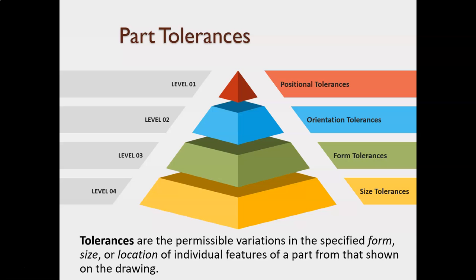There are really four different types of tolerances. We'll start at the bottom, the foundational level — level four tolerances. A level four tolerance is a size tolerance: your run-of-the-mill plus-minus tolerance, limit dimension, all the stuff you've probably seen up to this point. Those are the foundational level tolerances. If we want to refine our tolerances — that is, add another layer of control — then we move to level three.